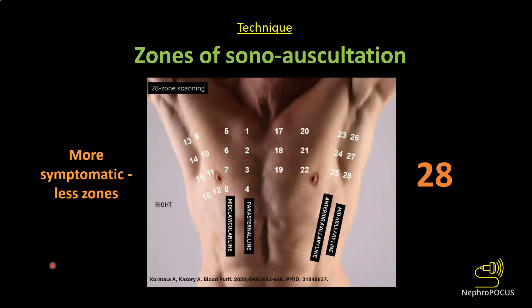There are several zones of sonoauscultation described in the literature. The general principle is that the more symptomatic a patient is, the fewer zones you need to auscultate. For example, if a dialysis patient comes to the ER with shortness of breath, you can auscultate just one zone on each lung and if you find B lines you can assume the patient is fluid overloaded. If you are adjusting dry weight on a chronic asymptomatic dialysis patient, you want to sonoauscultate more zones.